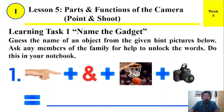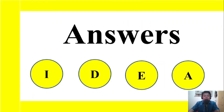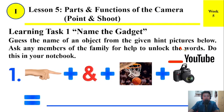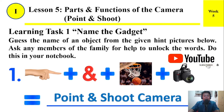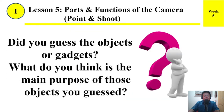Learning Task 1: Name the Gadget. Guess the name of an object from the given hint pictures below. Ask any members of the family for help to unlock the word. Do this in your notebook. For number 1, the answer is Point and Shoot Camera. For number 2, we have camera phone. Did you guess the objects or gadgets? What do you think is the main purpose of those objects you guessed?